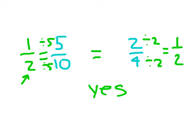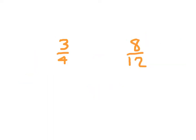Again, in order to compare them, we have to have like denominators. Here I have 3 fourths and 8 twelfths, and I recognize that I can get from 4 to 12 by multiplying by 3.